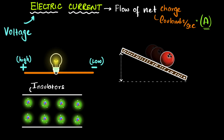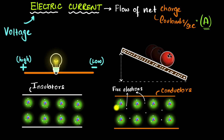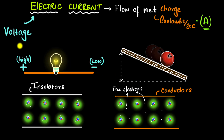On the other hand, if you take metals — which wires are made of — you'll find that the outermost electrons are not tightly bound. As a result, they are free to move around the material; we call them free electrons. Since you have free charges available for motion, we call these materials conductors, because if you put a voltage across them, these electrons can move and contribute to current. So you need a voltage across a conducting medium for electric current.